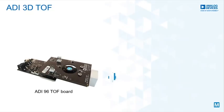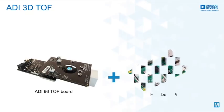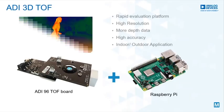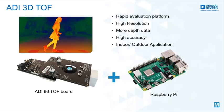ADI has developed a rapid prototyping platform, the 96TOF board, to simplify and enable the design of such complex systems. This platform can be paired with processor boards such as Raspberry Pi, which allows software and algorithm development.